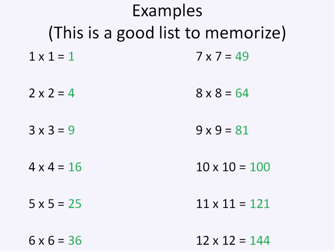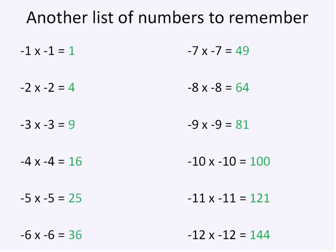Let's go ahead and take a look at our list. When you're working with square roots, you really need to have these numbers memorized. So the perfect squares are the numbers in green: 1, 4, 9, 16, 25, 36, 49, 64, 81, 100, 121, and 144. Those are perfect squares up to 12 times 12, and they're really good numbers to have memorized.